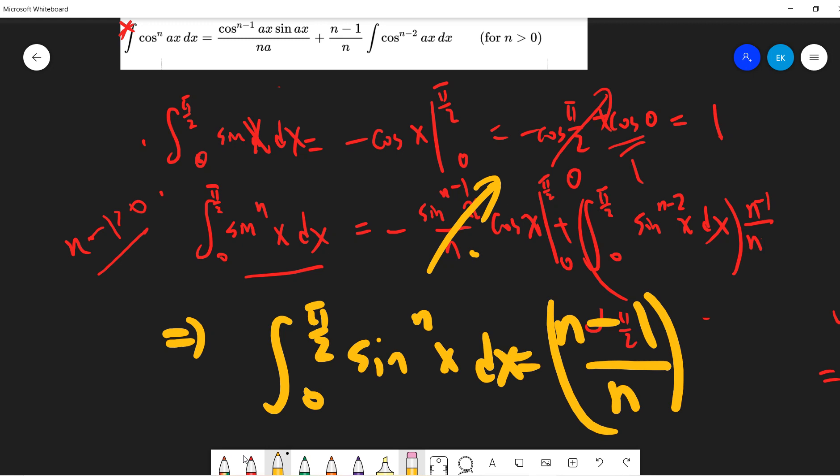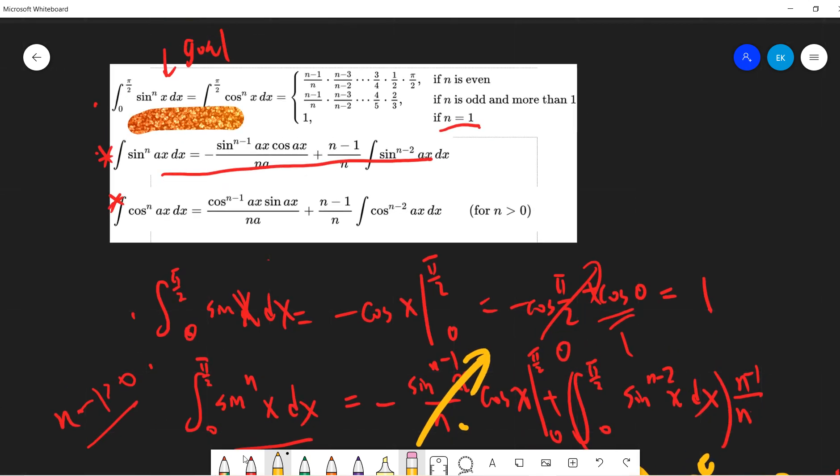Right, so the n minus 1 and therefore the n minus 2 terms. If n is larger than 0... sorry, so n is larger than 1.